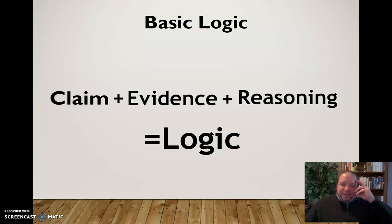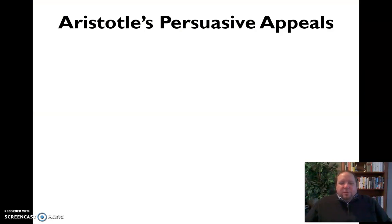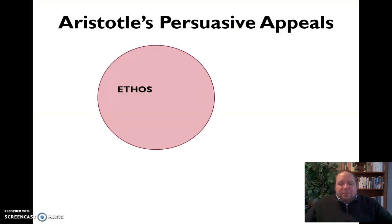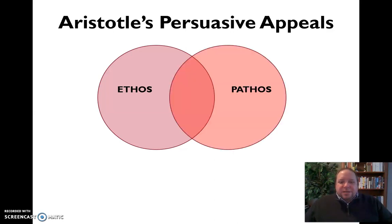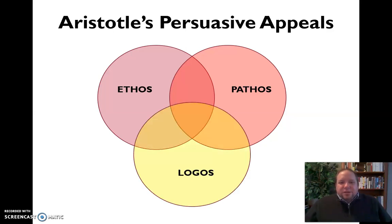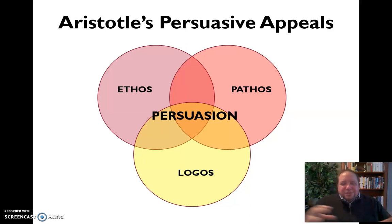We want to appeal to the audience's head as well as their heart — some balance, some focus on both pathos and logos, as well as ethos. When you have the credibility, the emotional connection, and the logical argument with facts and statistics all working together, there in the middle where all three connect is the most effective form of persuasion.